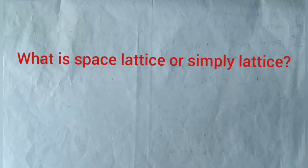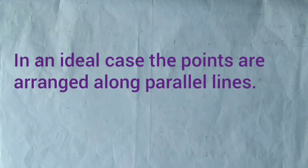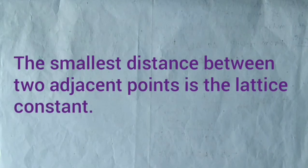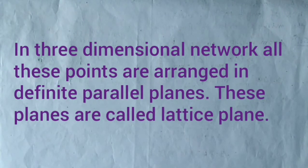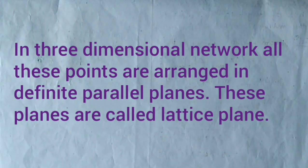First we need to know about space lattice. A space lattice, or simply lattice, is an arrangement of an infinite number of points in the form of a two-dimensional or three-dimensional network in space. In an ideal case, the points are arranged along parallel lines. The smallest distance between two adjacent points is the lattice constant. These points are called lattice points, and in a three-dimensional network, all these points are arranged in definite parallel planes, which are called lattice planes.